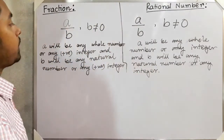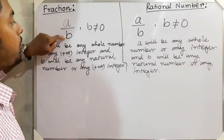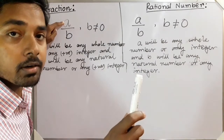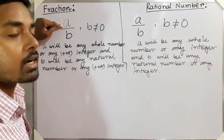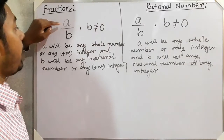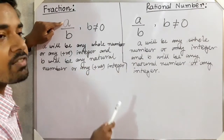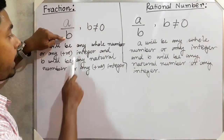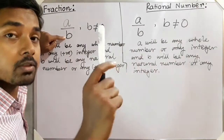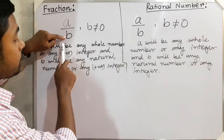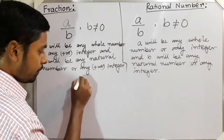In a fraction, a will be any whole number — meaning the value of a can start with zero — and a can also be any positive integer. Here b will be any natural number, and natural number starts with one, so the value of b starts with one. B can also be any positive integer.